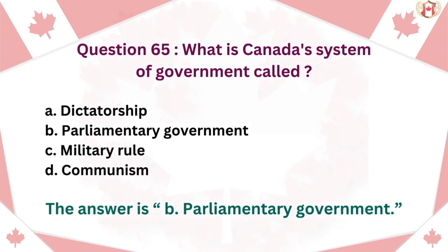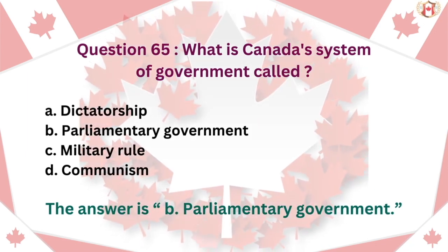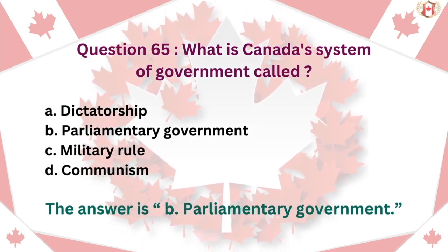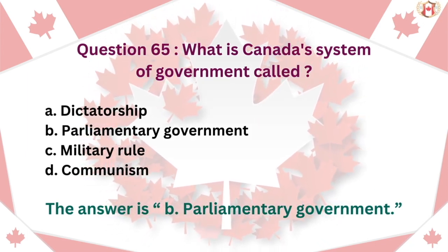Question 65: What is Canada's system of government called? A. Dictatorship, B. Parliamentary government, C. Military rule, D. Communism. The answer is B. Parliamentary government.